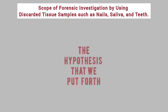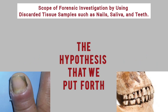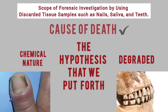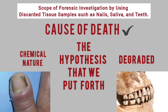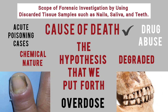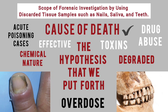Tissue samples like nails or teeth that serve as evidence in a criminal case tend to retain their chemical nature and are relatively less degraded after the death of the victim. Thus, they can significantly contribute to the determination of cause of death. Acute poisoning cases, death by drug abuse, and overdose of lethal medications could be effectively handled by the analysis of nail samples, as the deposition of toxins will take place at these sites and remain there for a prolonged time period.